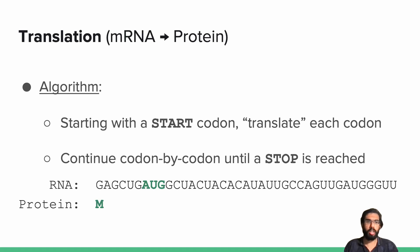Then I take the next triplet GCU and translate that, which gives us A. Then I take my next triplet ACU and translate that, which gives us T. Then H, I. Then we have GCC, which translates to A. S for AGU. And finally we reach UGA. UGA is a stop codon, so I stop translation here. We have successfully translated our RNA sequence into the protein shown below.